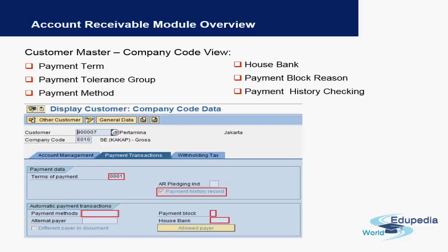The next tab is the payment transactions tab, which is very important for accounting. In this tab you have things like the terms of payment, which is an agreed payment term between you and the customer. You also have the payment method, which means the different kinds of methods by which the customer may make payment — it can be an incoming check, a bank transfer, or a separate transfer.